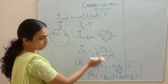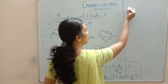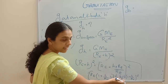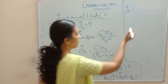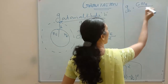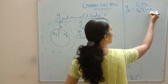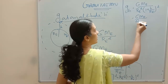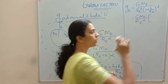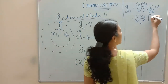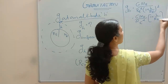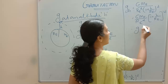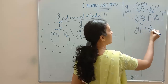Substituting this back, g at height H equals G M_E divided by R_E squared times the quantity 1 plus H over R_E, whole squared. Now G M_E divided by R_E squared is just g at the surface. Taking the quantity 1 plus H over R_E to the power minus 2 to the numerator gives us g times the quantity 1 plus H over R_E to the power minus 2.